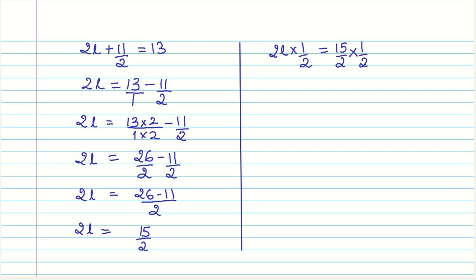So, we need to do the same multiplication on both the sides because we have to keep the equation balanced. And, this is something that we have discussed in earlier videos. Now, let us, these 2 gets cancelled. So, we have L equals 15 by 4. And, this is your length of the rectangle.